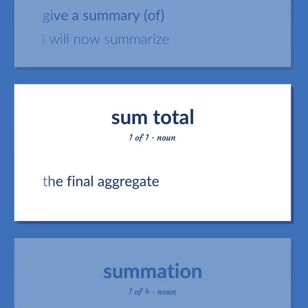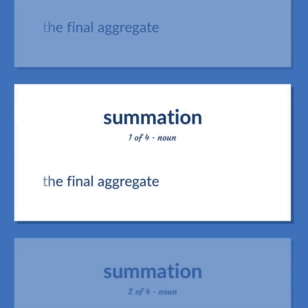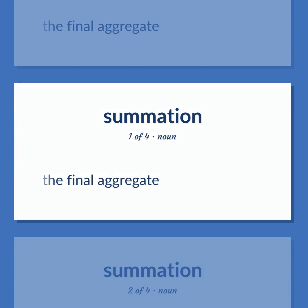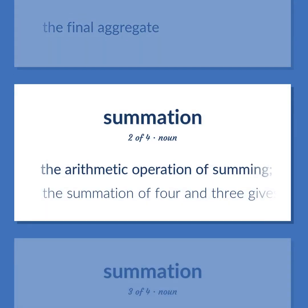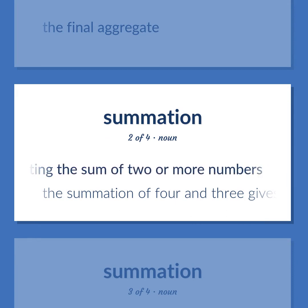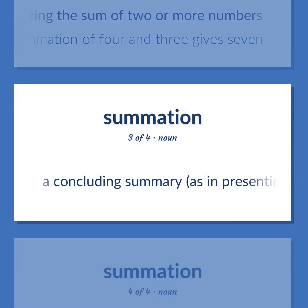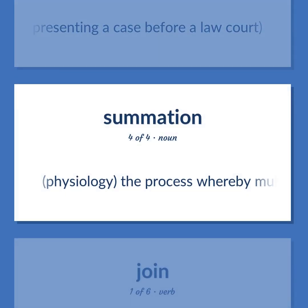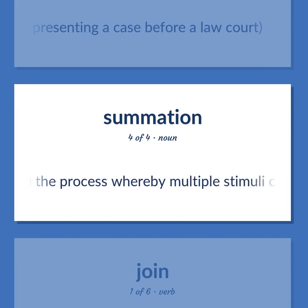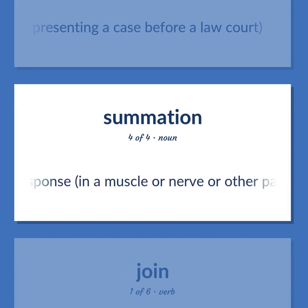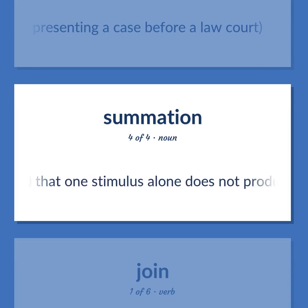Summation: The final aggregate. The arithmetic operation of summing; calculating the sum of two or more numbers — the summation of four and three gives seven. A concluding summary, as in presenting a case before a law court. Physiology: the process whereby multiple stimuli can produce a response in a muscle or nerve or other part that one stimulus alone does not produce.